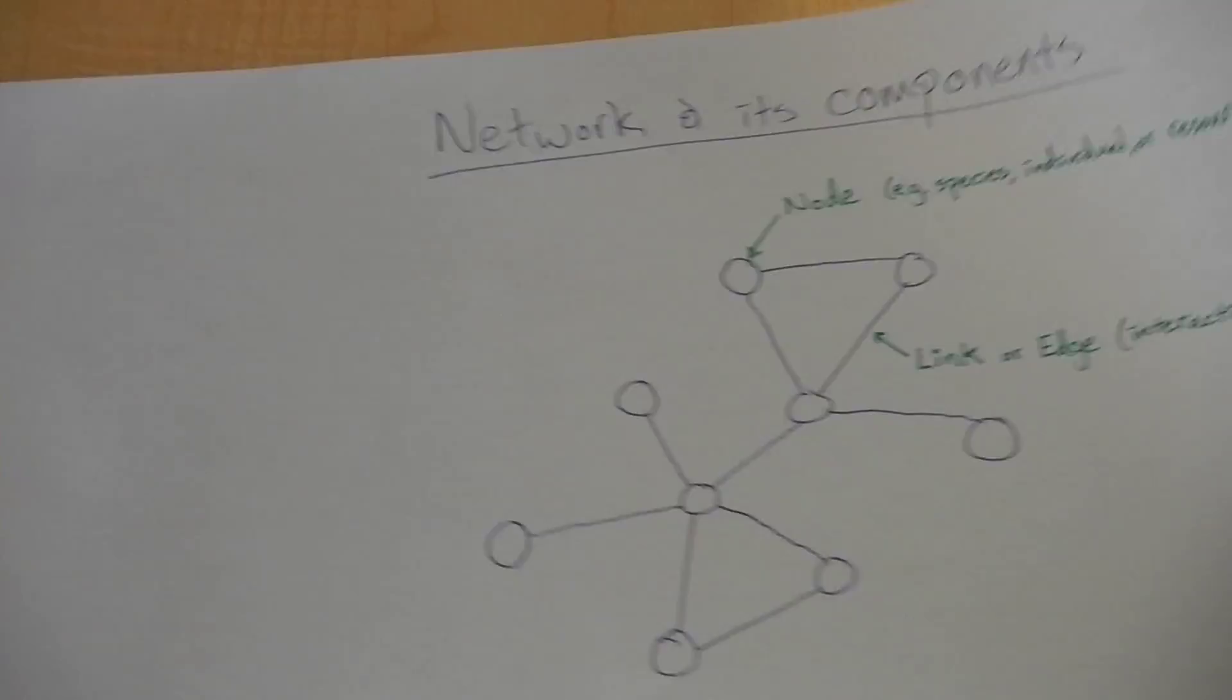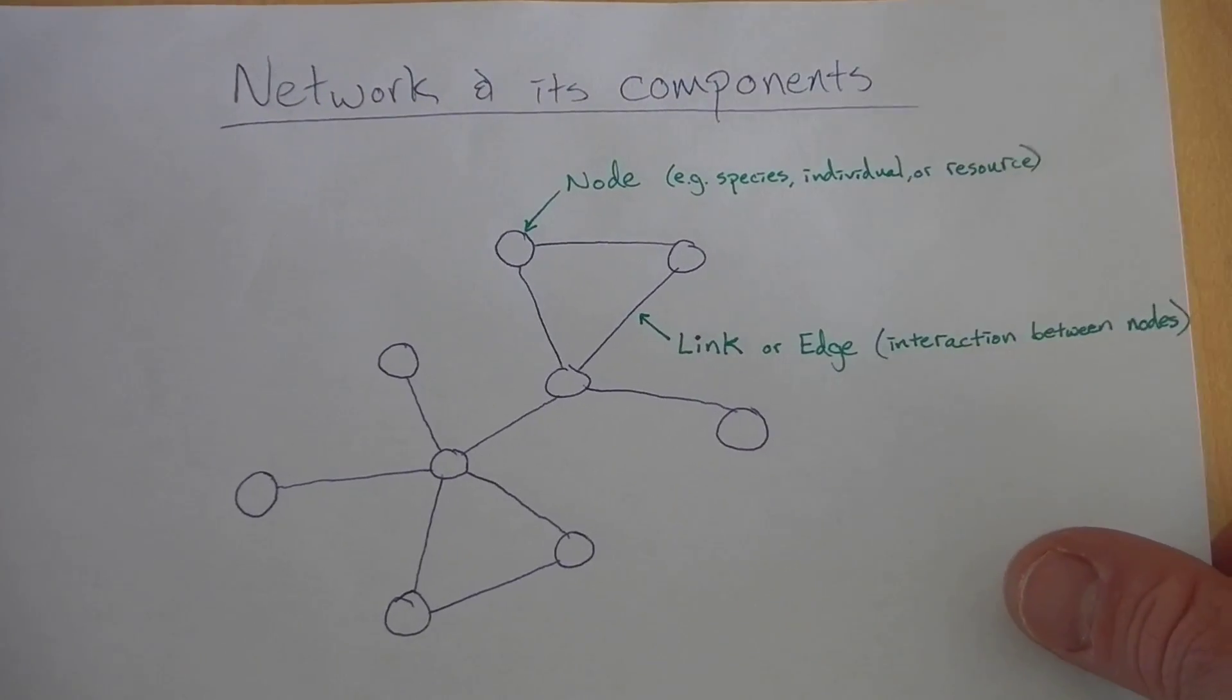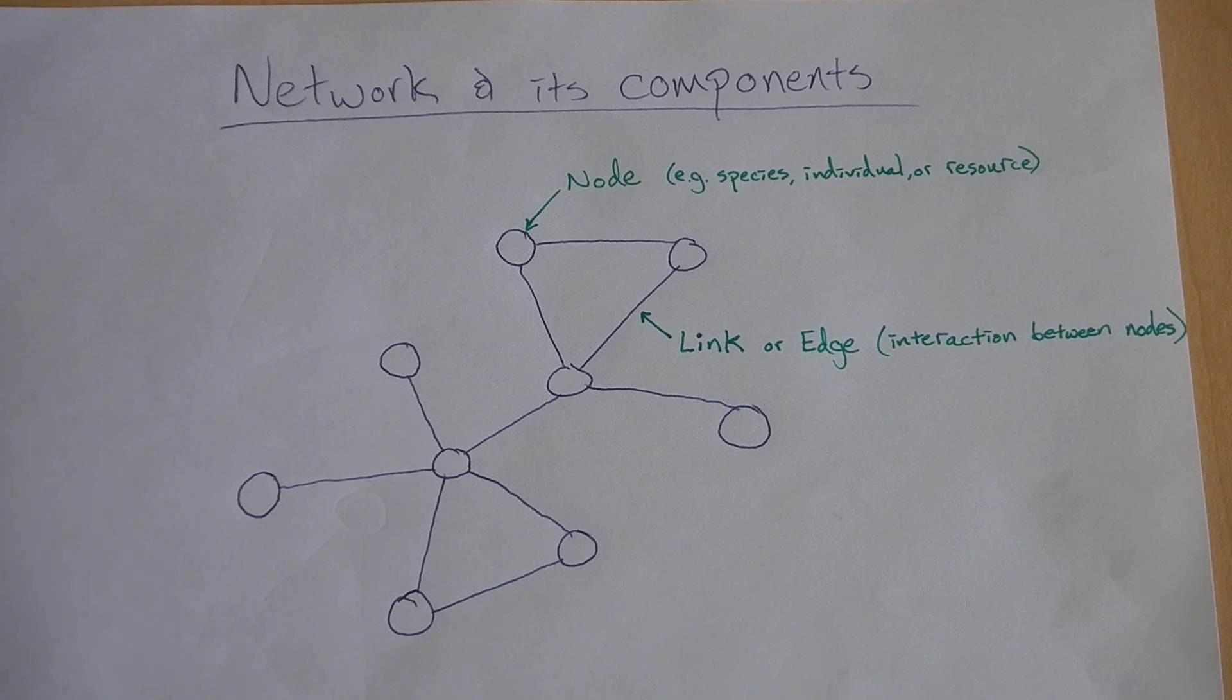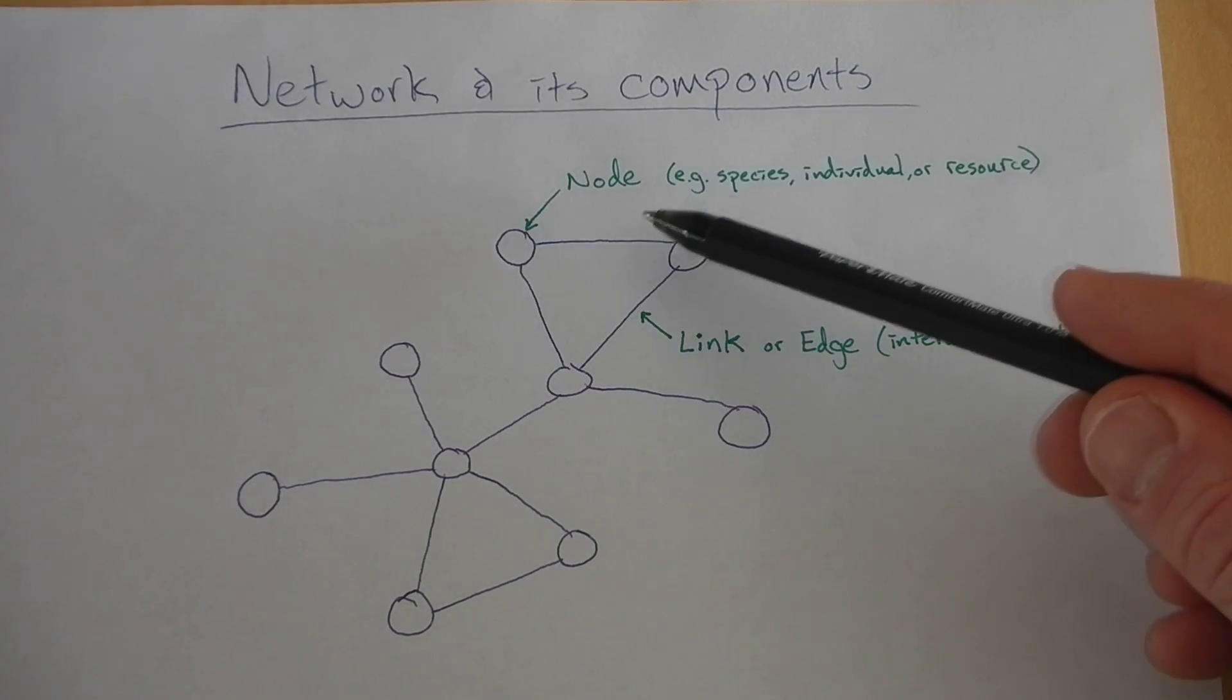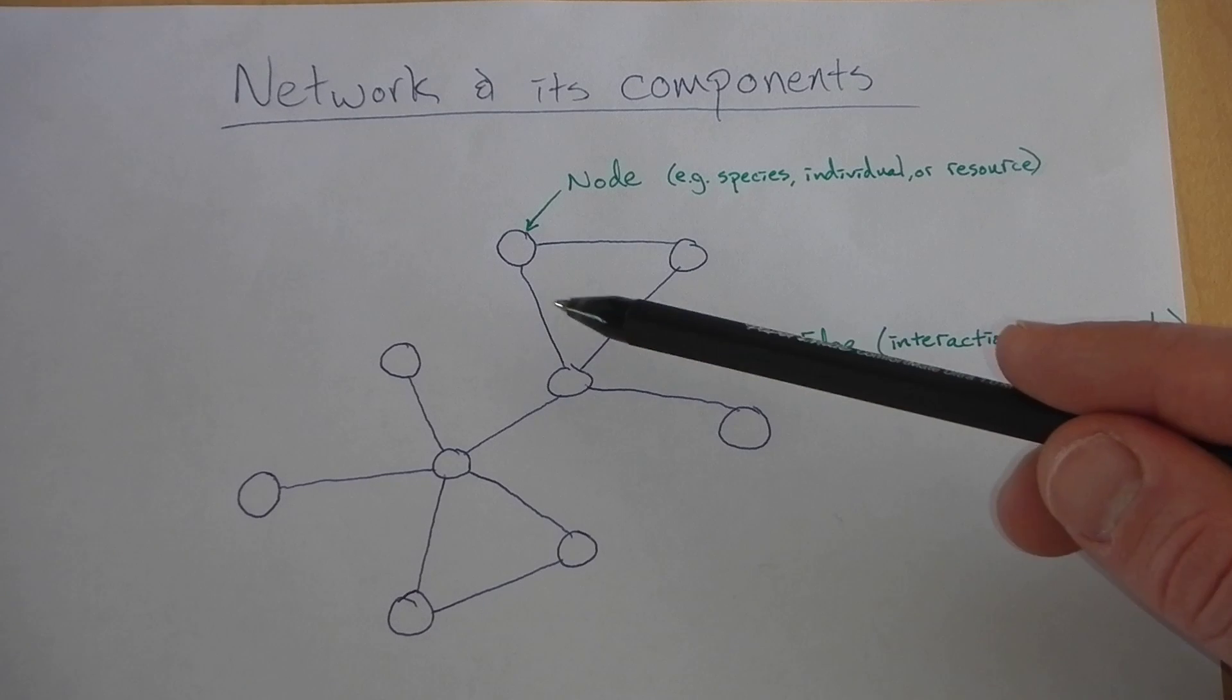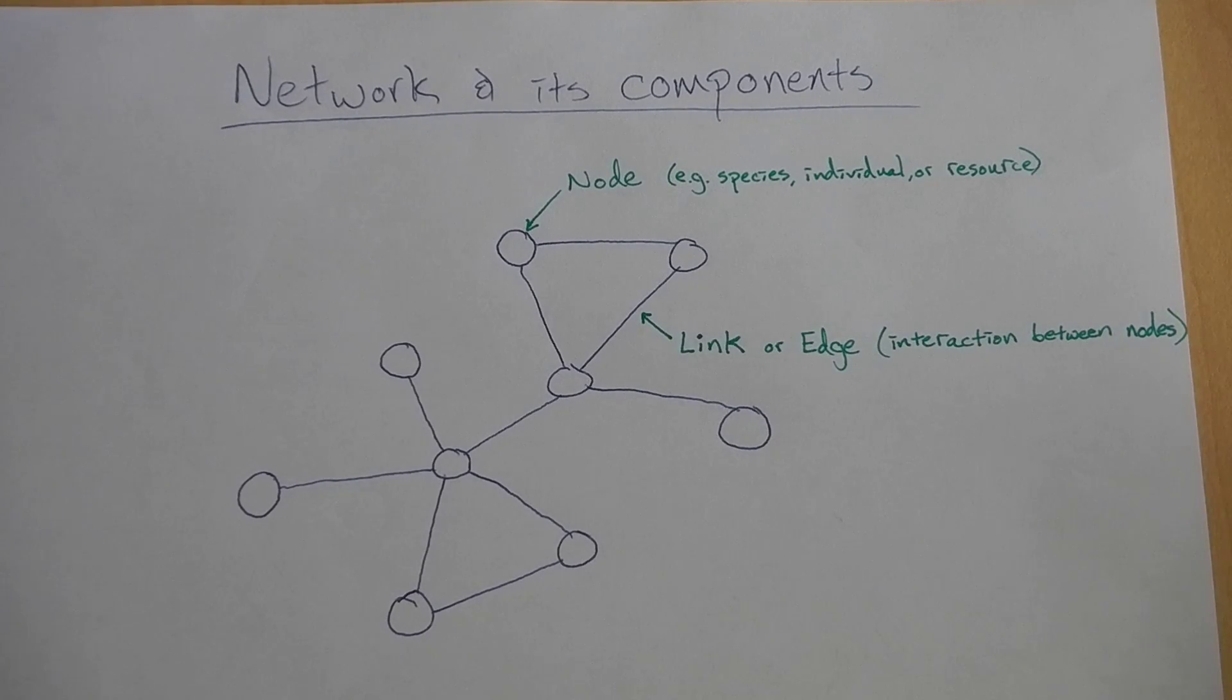So first, let's talk about a network and its components. A network is essentially a graphical representation of a system we're interested in understanding. Typically, these graphs consist of nodes and links or edges between these nodes.